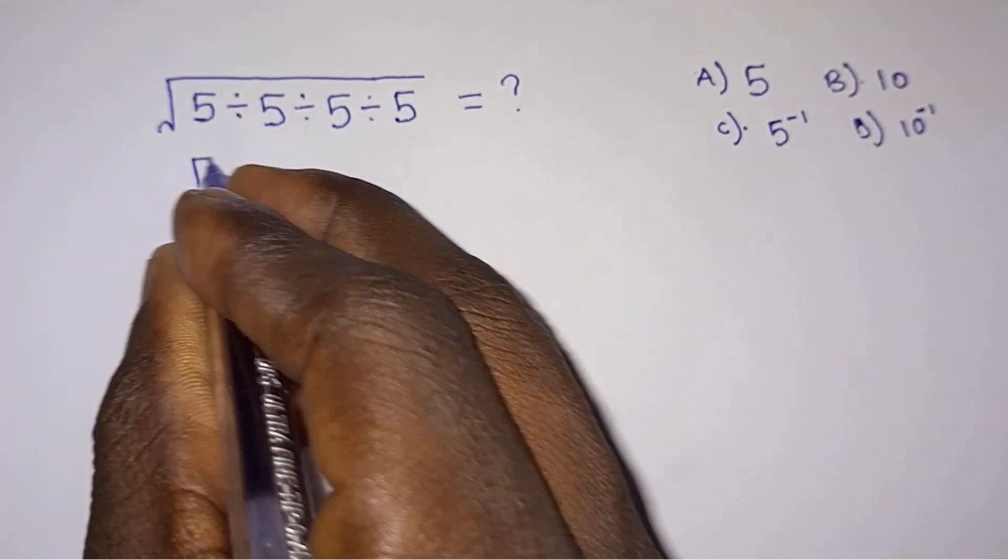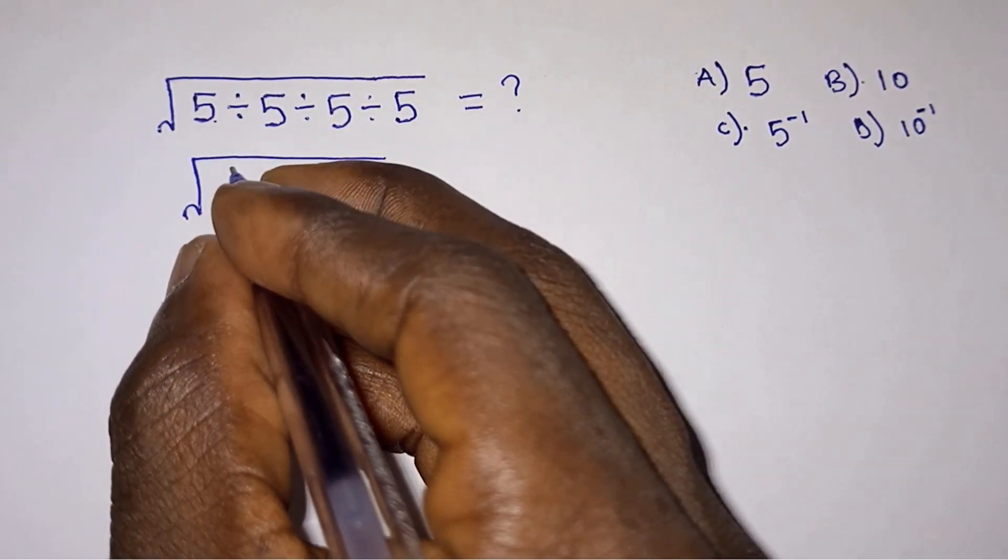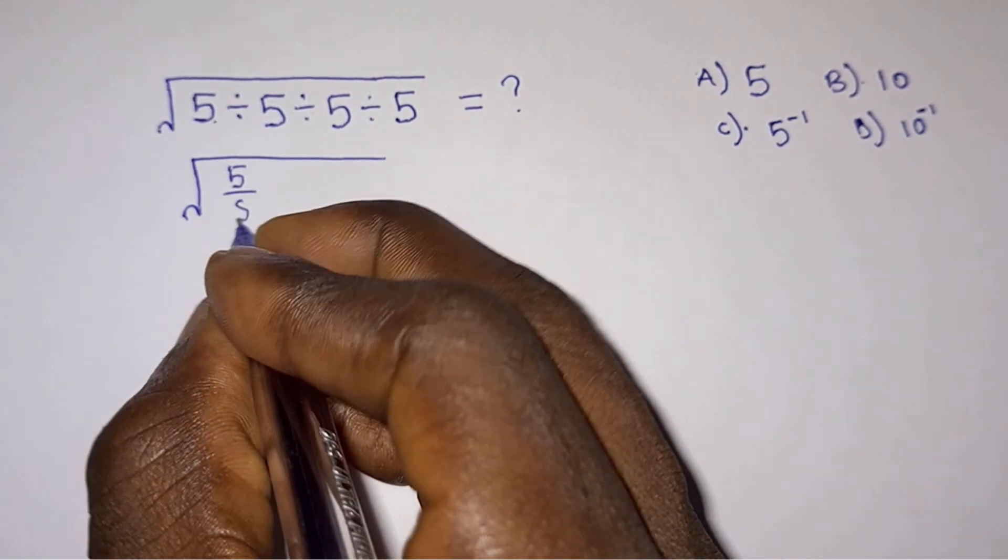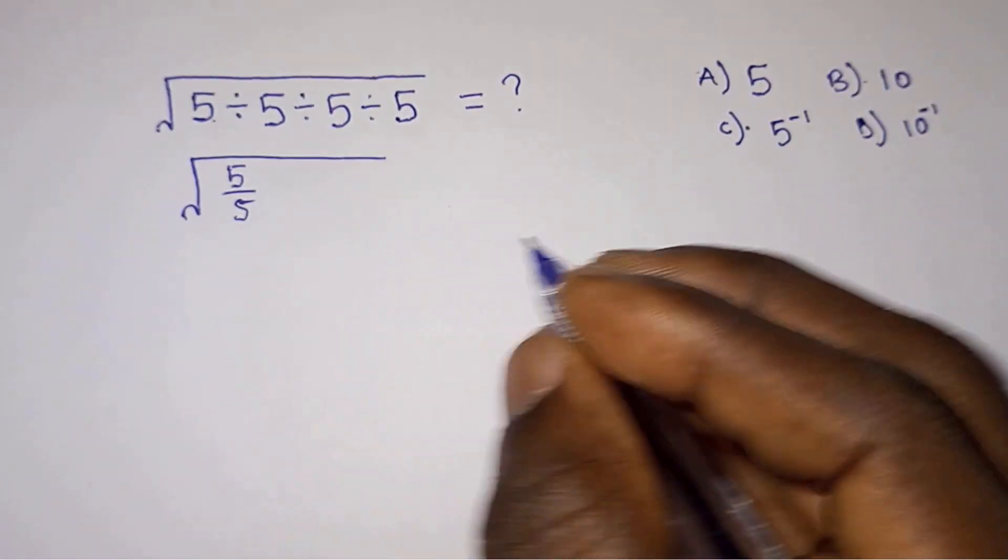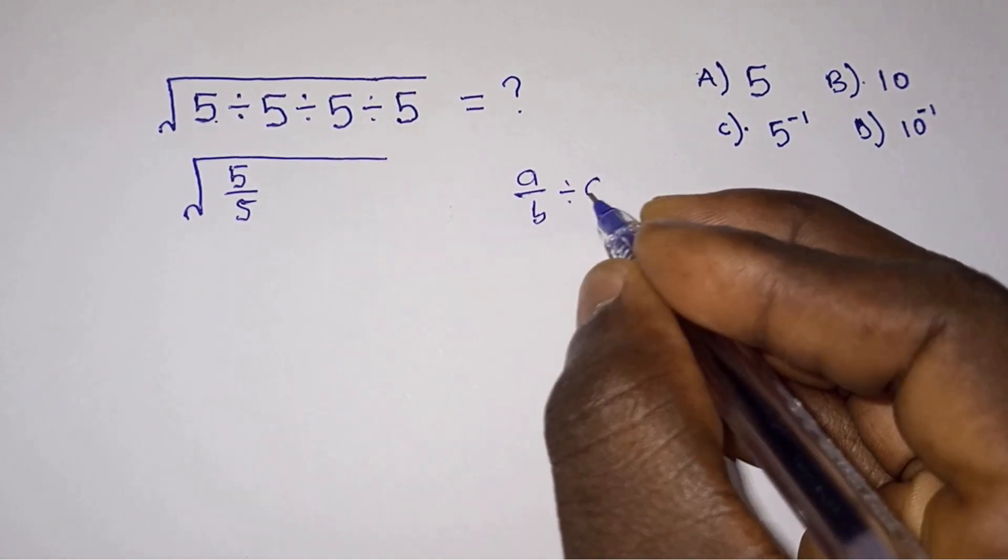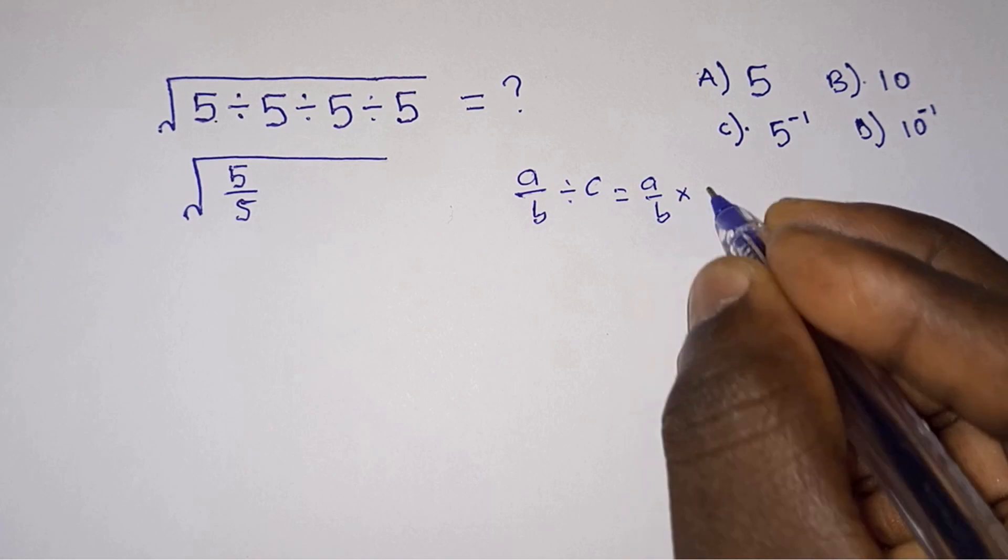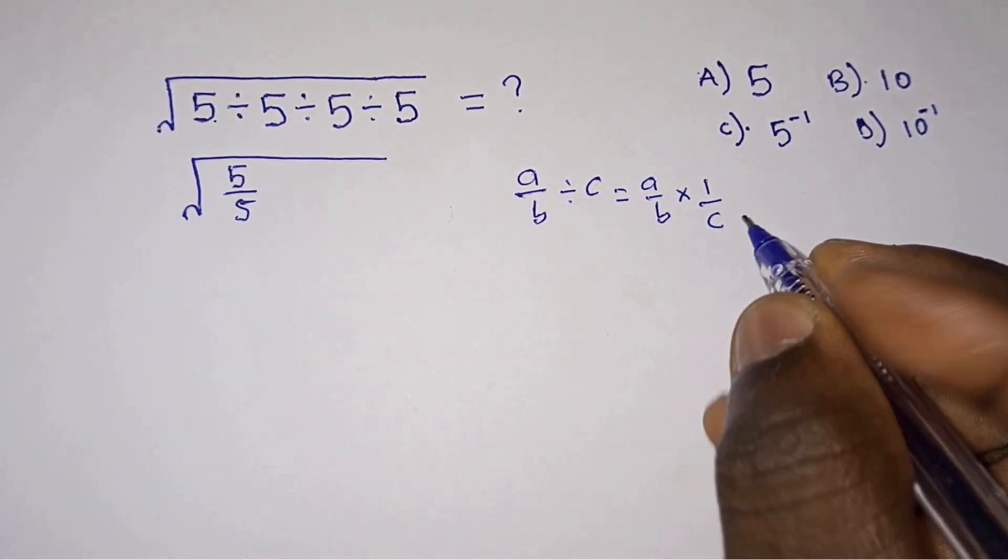First, we'll put the square root down, then we have 5 divided by 5. I'll write it as 5 over 5. Note that a over b divided by c is the same as a over b times 1 over c.